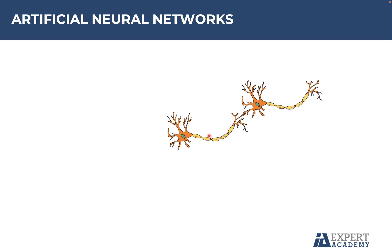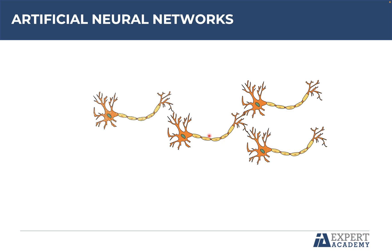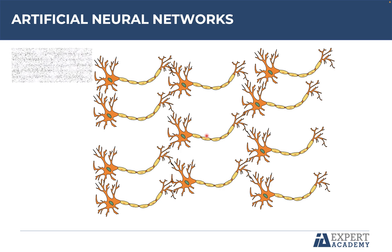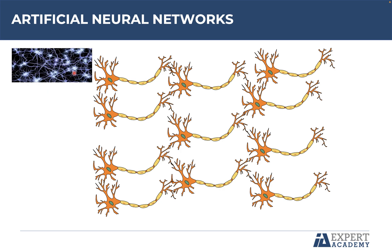Then we can add more and more neurons to build a complete neural network, very similar to the one you have seen in the first image. The dendrites receive data from other neurons. The cell body processes this data. And finally, the axon transmits signals to other neurons using the axon terminals. In other words, the whole neuron is used by the brain to process information, so we can also call a neuron an information processing unit.